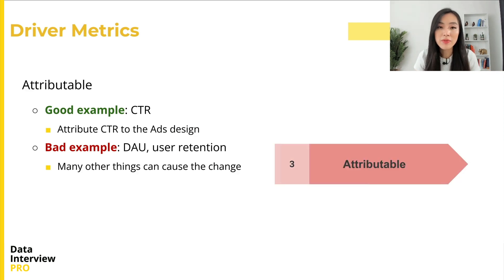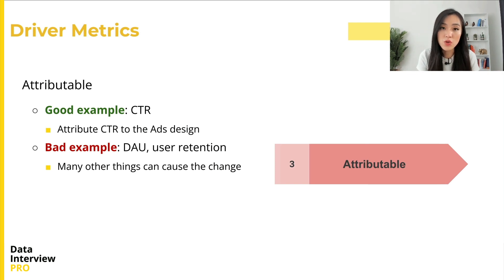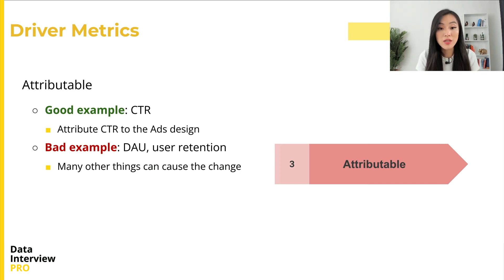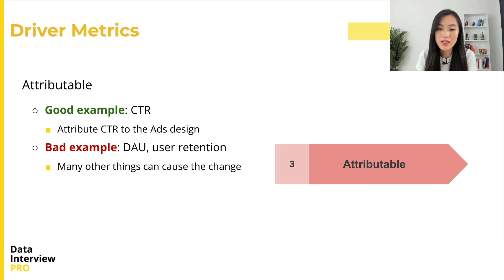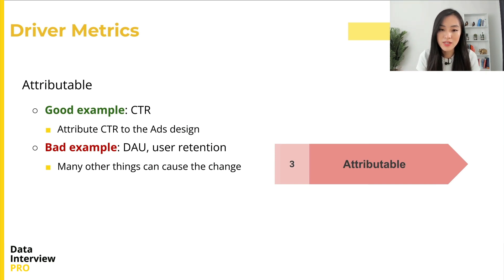Finally, a metric should be attributable. In other words, we must be able to attribute the change in a metric to the experiment variant. This requires us to be able to measure the metrics in the control and the treatment groups separately. Using the ads example, we can easily attribute the change in click-through rate to the design of the ads — good design results in a higher click-through rate, and bad design results in a lower click-through rate. These are the three attributes of good driver metrics.